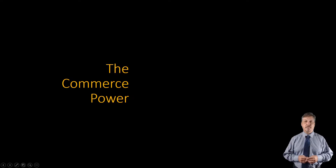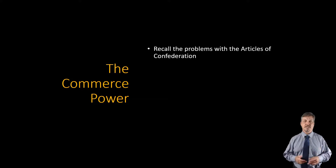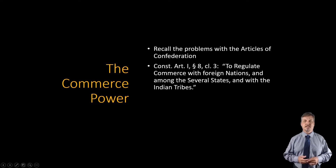Now that we've discussed the Necessary and Proper Clause, let's turn to the Commerce Power. Recall our discussion in Unit 1 that one of the major problems with the Articles of Confederation was that states engaged in trade wars using tariffs and other taxes, preventing the growth of a national economy. The problem was directly addressed in Article 1, Section 8, Clause 3 of the 1789 Constitution, which granted Congress the power to regulate commerce with foreign nations and among the several states and with the Indian tribes.